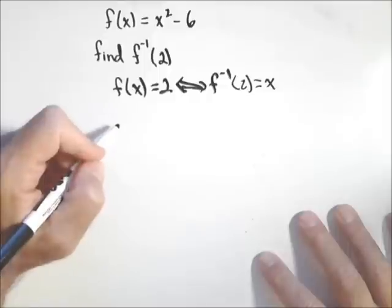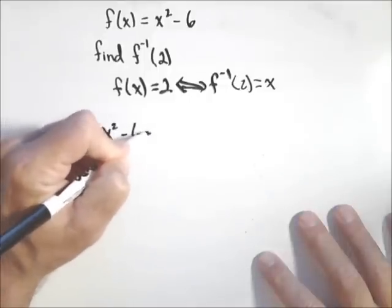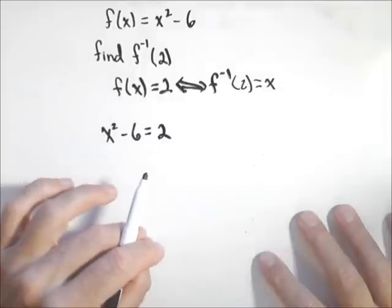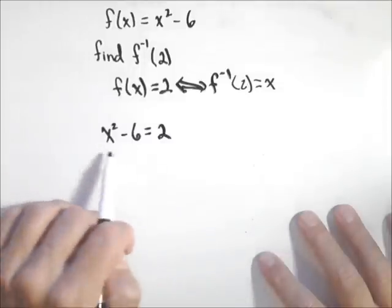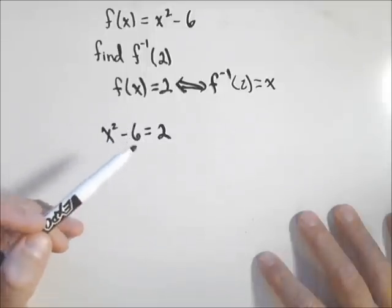So to solve to find f inverse of two, what we're going to do is we're going to take x squared minus six and set it equal to two. Now the method we use to solve here is going to vary depending on what our equation looks like. We might be able to solve it algebraically, we might not. If we can't, that's when we can use our graphing calculator to help us out.